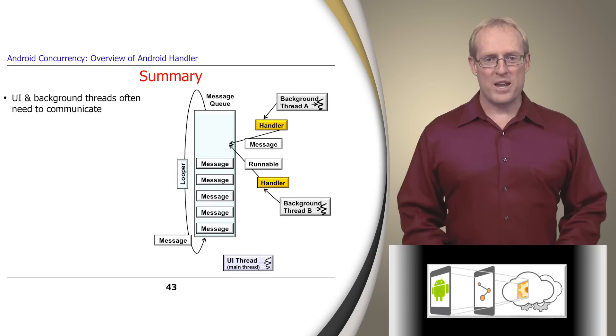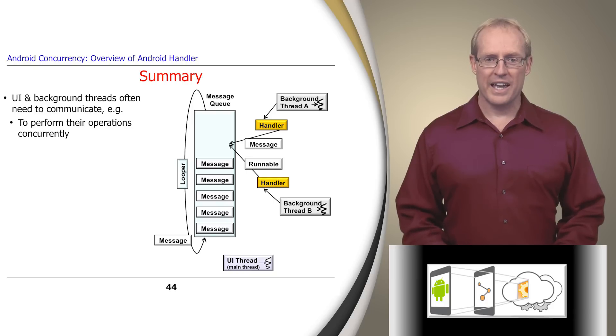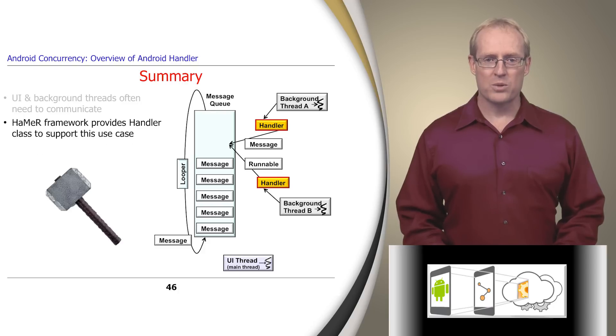In summary, background threads and the user interface thread in Android often need to communicate to perform their operations concurrently and or coordinate their behavior.